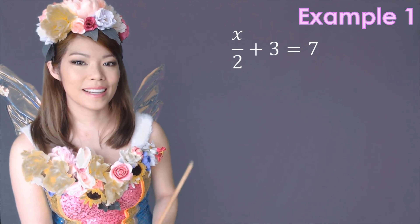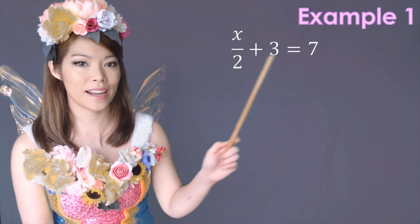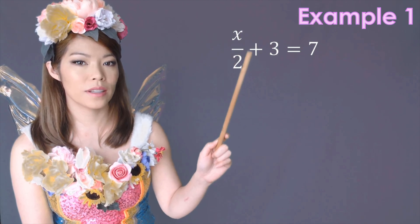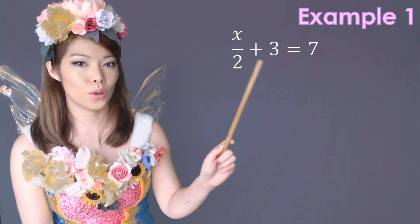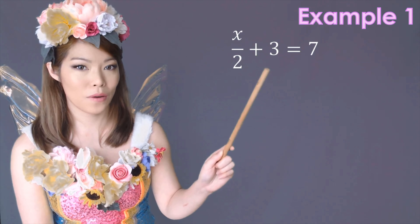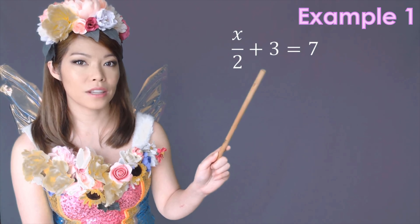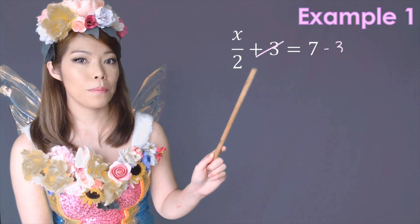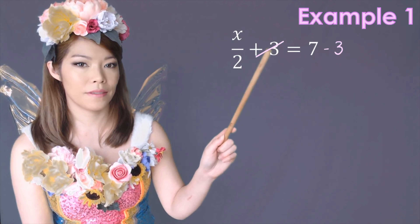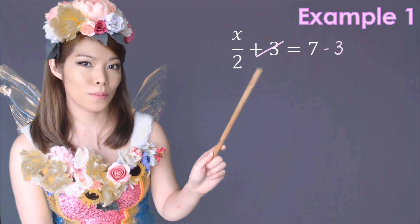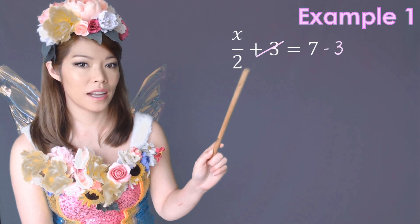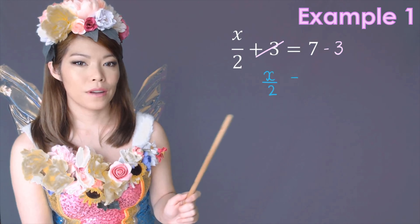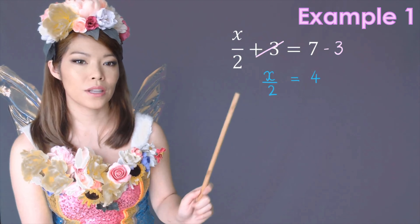So for the first example, x over 2 plus 3 equals 7. We can see that the last thing on the left side was plus 3. The inverse of plus 3 is minus 3. And as we do minus 3 on both sides, the left side gets cancelled out. So I'm going to skip writing minus 3 on this side and just cross the 3 out. So now we're left with x over 2 equals 7 minus 3, which is 4.